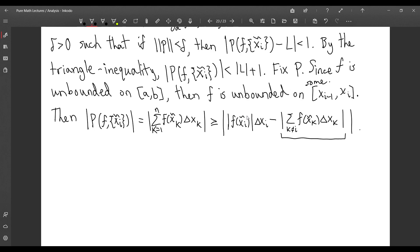So we're going to leave this alone. Since f is unbounded on [xᵢ₋₁, xᵢ], we can choose our evaluation point in this interval to make the absolute value of f at the evaluation point as large as we want.